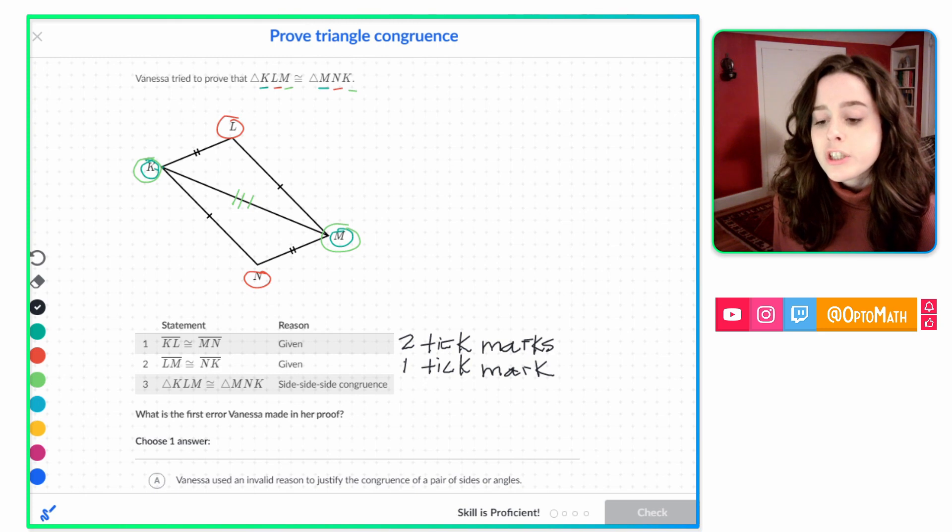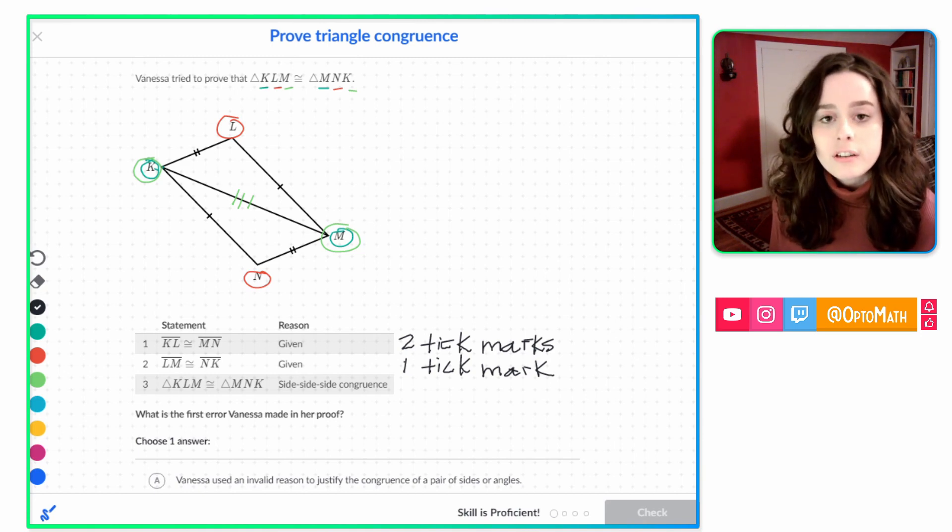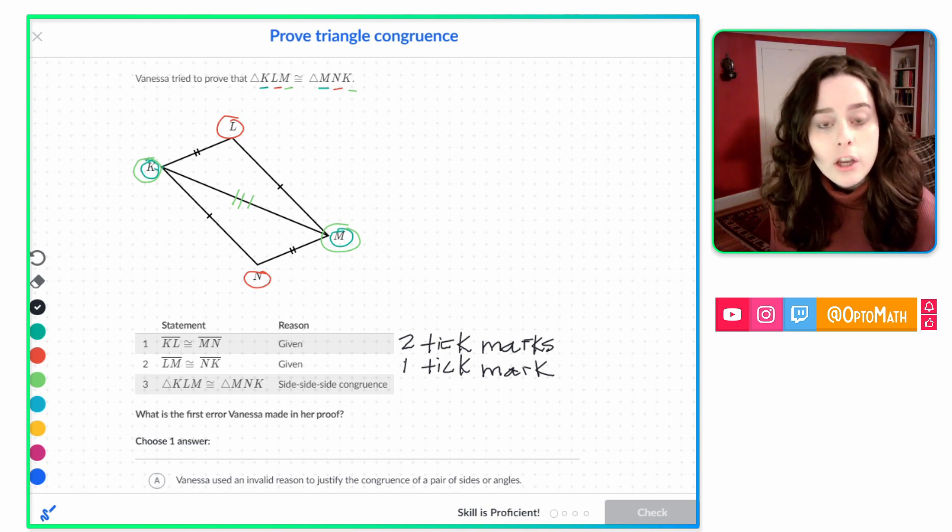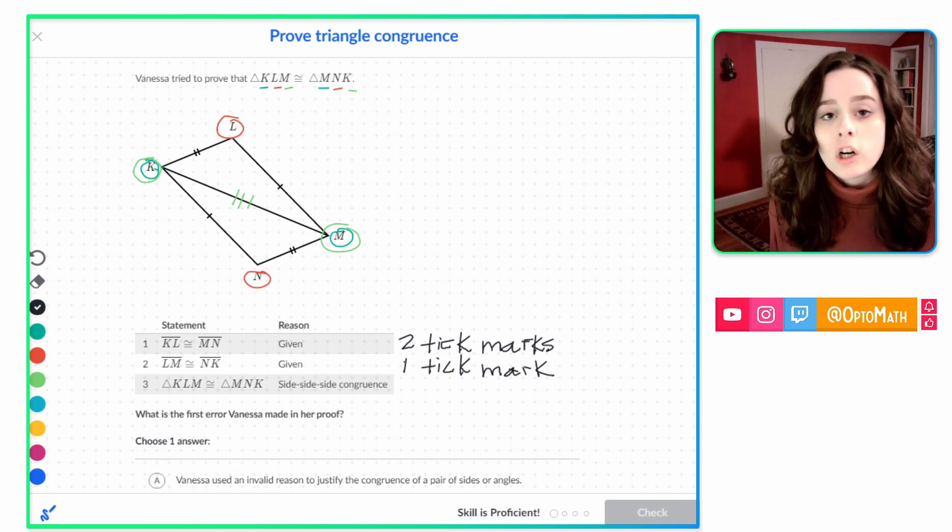Next, we see that on number three, she's gone ahead and said that these triangles are congruent by side, side, side congruence. And KLM and MNK. It looks like that's a true statement because since we know that our shared side is congruent to itself, that means that it is side, side, side congruence. But she did not tell us that KM was congruent to itself. So she missed that step. So that's what we're going to look for in our answer.